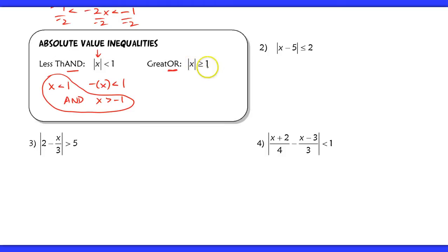Now, for the absolute value of x is greater than or equal to 1, this is a greater question. So this is an OR question. So I still get two cases. Either x is greater than or equal to 1, or the opposite of x is greater than or equal to 1. And solving for x here, I get x is less than negative 1. So that's basically our definition that's going to come into play here when we're solving these inequalities.